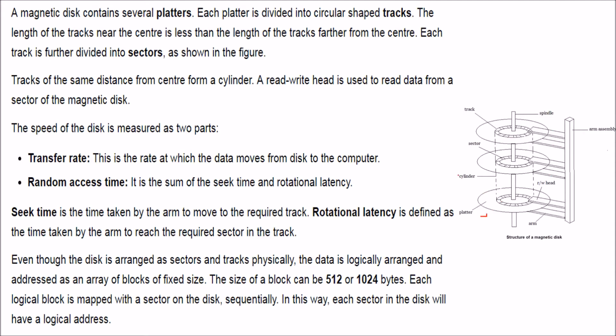A magnetic disk contains several platters. As you see here there are number of platters. Each platter is divided into circular shaped tracks. As you see here these are tracks. The length of the tracks near the center is less than the length of the tracks which are farther from the center. Each track is divided into sectors. These are the sectors. The tracks of the same distance from the center form a cylinder. This is cylinder.